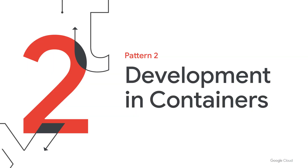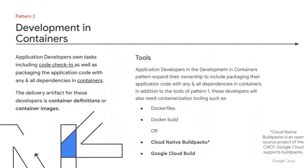So that brings us to pattern two: development in containers. In the development in containers pattern, application developers take on the additional responsibility of packaging their application code along with any and all dependencies into containers. The delivery artifact of your app dev teams shifts from source code to container files or container images. You might think of a container image like a binary file of a traditional application — it's the compiled form of the package containing your app and its dependencies that can be run as a container.